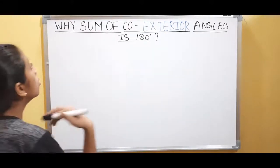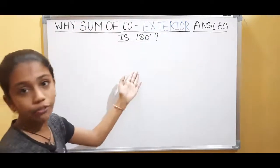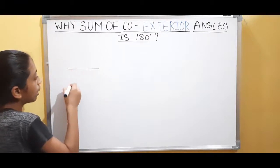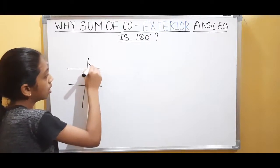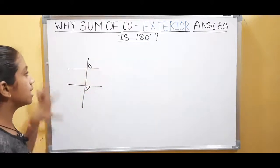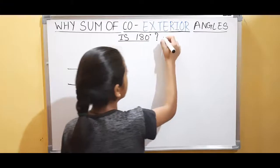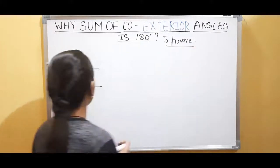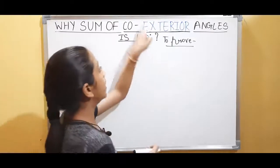Now we have to prove why the sum of co-exterior angles is 180 degrees. Let's make the diagram again — two parallel lines, a transversal. Let's name these angles as angle 1 and angle 2. These two angles are co-exterior angles. To prove: angle 1 plus angle 2 is equal to 180 degrees.